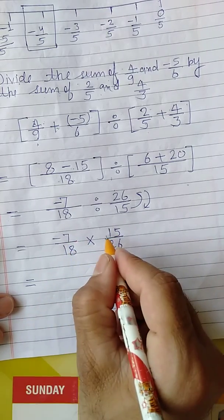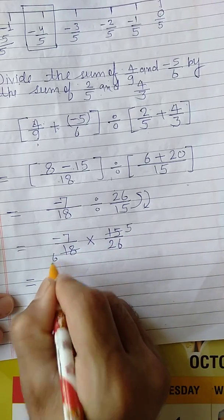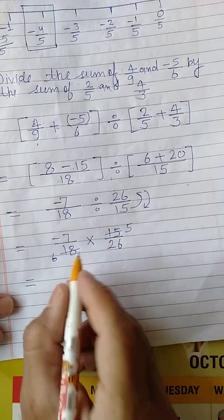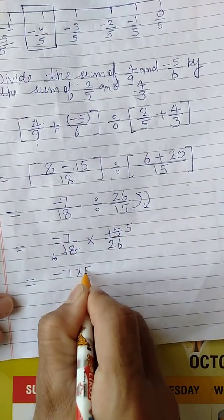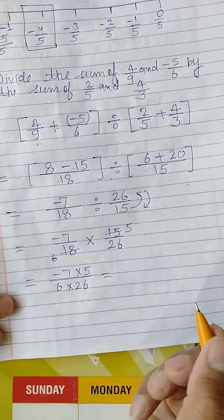This will be equal to 6, this will be equal to - if it is divisible, divide. See, it is divisible by 3. 3 5 ja 15, 3 6 ja 18. And it is not divisible, to multiply: minus 7 multiply by 5 in numerator, 6 multiply by 26 in denominator.